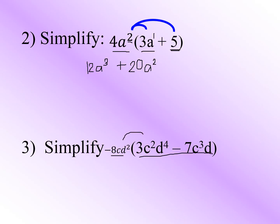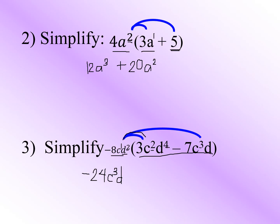First, negative 8 times 3 gives us negative 24. Copy variable c, add the exponents: 1 plus 2 gives us 3. Then copy variable d and add exponents: 2 plus 4 gives us 6. So negative 8cd² times 3c²d⁴ gives us negative 24c³d⁶.